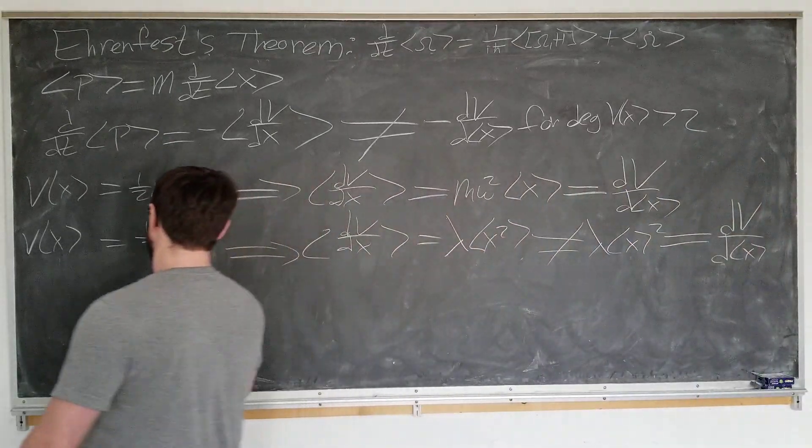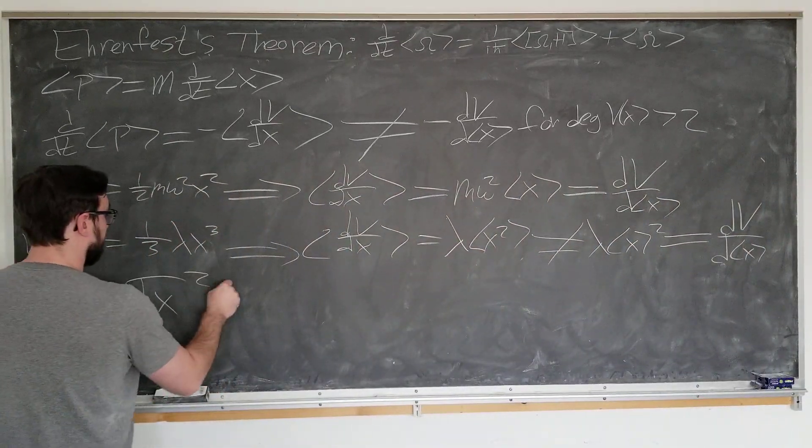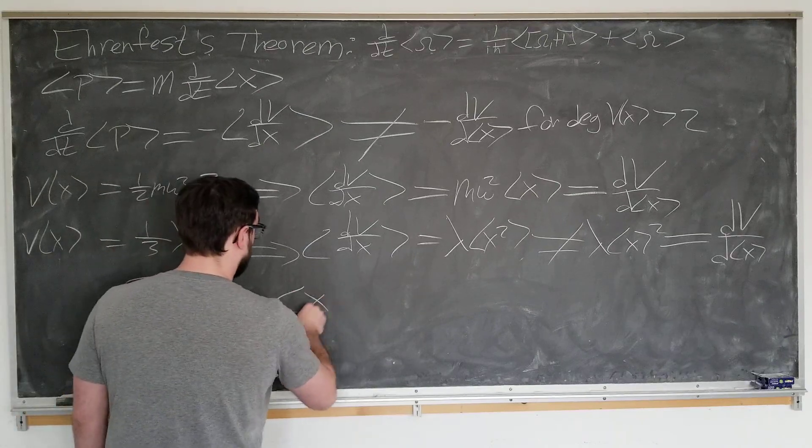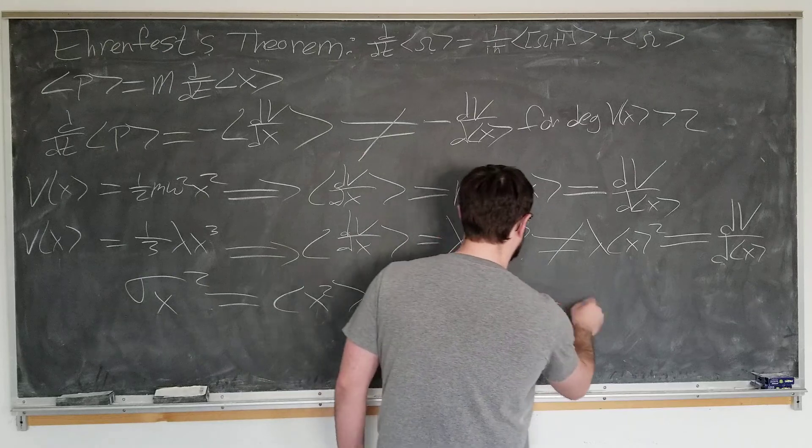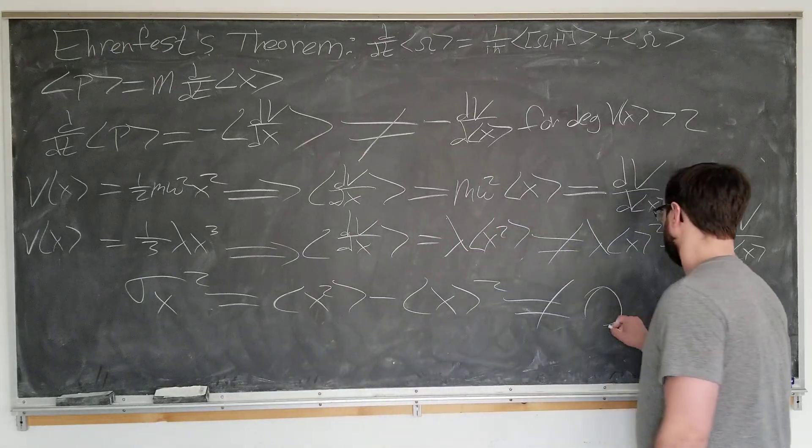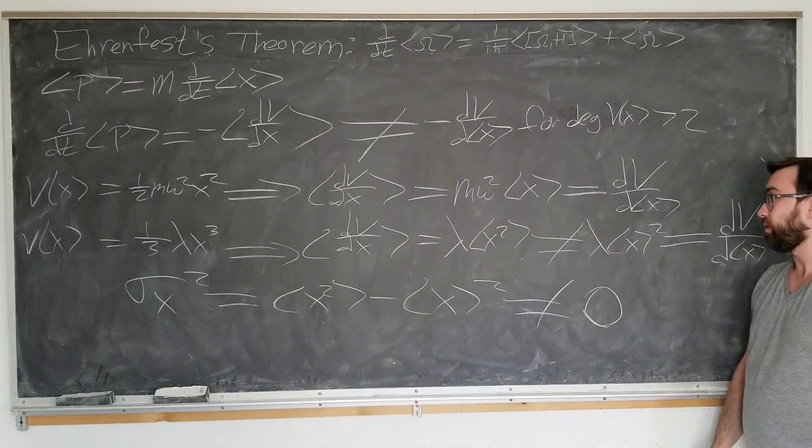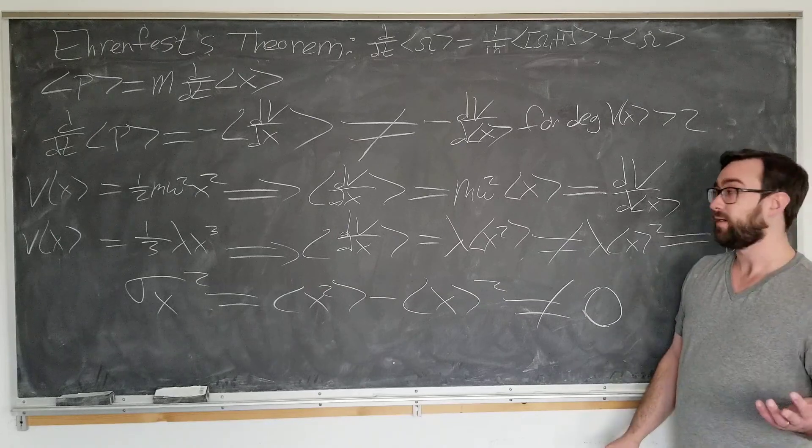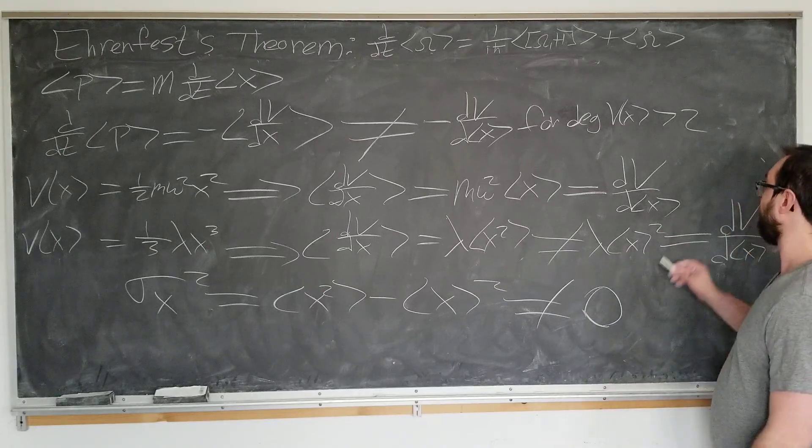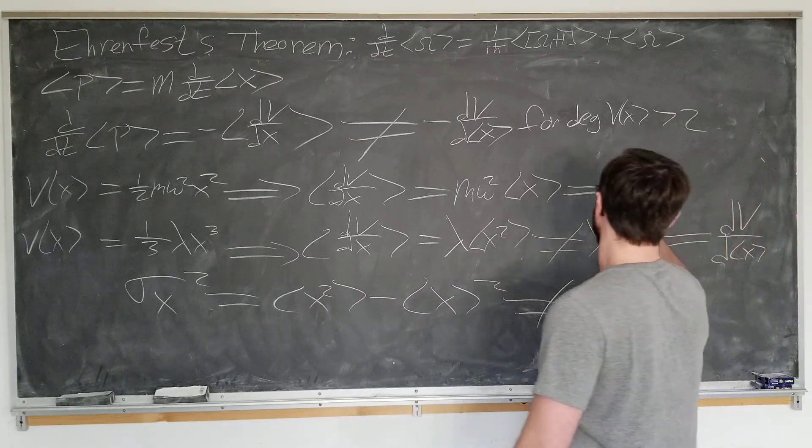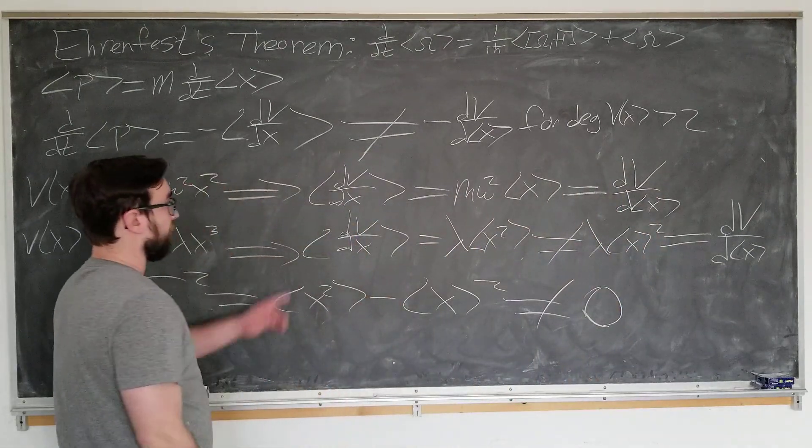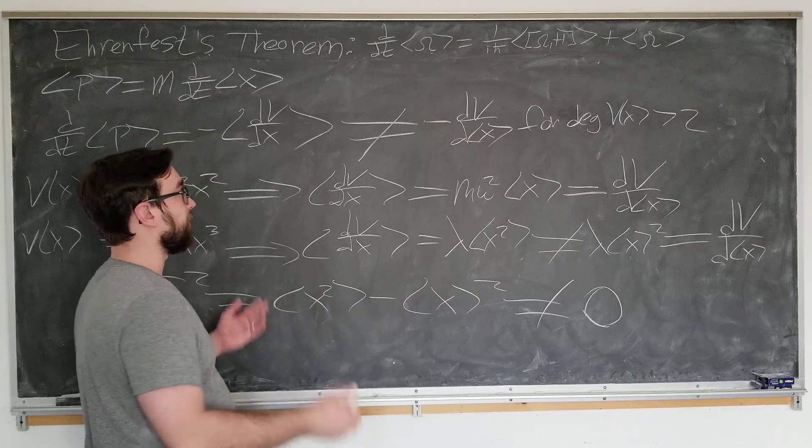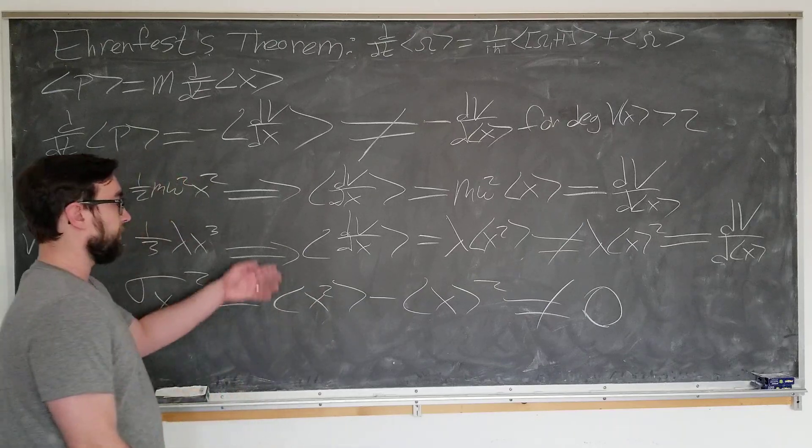We can see this because actually the uncertainty in x squared is bracket x squared minus bracket x squared, which is not equal to zero in general. So what can we say about this in general? Well, these two quantities, dv by d bracket x and dv by dx bracket, will be approximately the same in most cases, but they will not always.